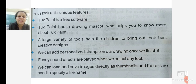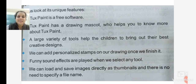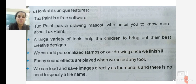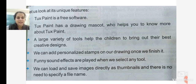We can add personalized stamps. We will see what personalized stamps are in Tux Paint. After you finish drawing, you can add personalized stamps — we will see more ahead in the chapter. When you select any option, a sound effect is given to every button when you click on it, making it more interesting for children. You can upload and save images directly as thumbnails — you don't need to save the file and name it; it gets saved directly.